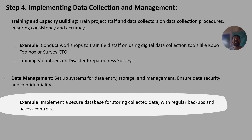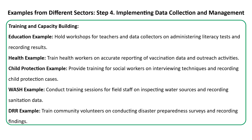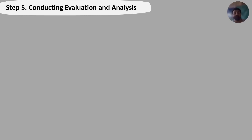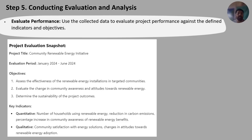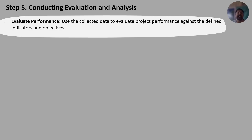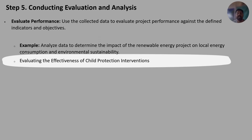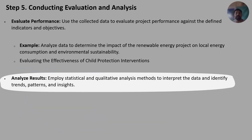Step five is to conduct evaluation and analyze the data. Use the collected data to evaluate project performance against the defined indicators. For example, analyze data to determine the impact of the energy project on local energy consumption and environmental sustainability. For a child protection project, evaluate the effectiveness of child protection interventions.